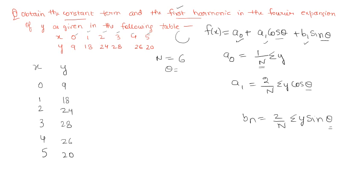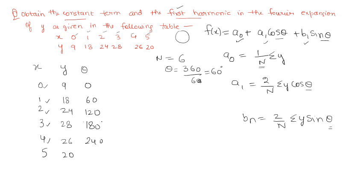We also need theta. Since a complete circle is 360° and there are 6 values, each part is 60°. So theta values are: 0×60=0°, 1×60=60°, 2×60=120°, 3×60=180°, 4×60=240°, and 5×60=300°.